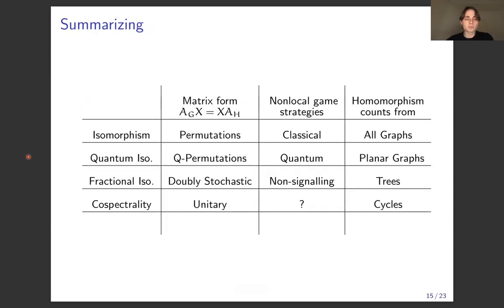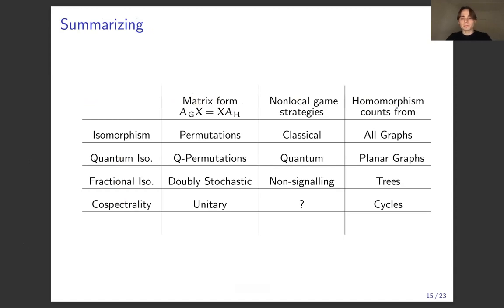Here's a quick summary of what we've seen. On the left are four relations: isomorphism, quantum isomorphism, fractional isomorphism, and co-spectrality. Along the top are three ways of viewing them: matrix formulation, strategies for a non-local game, and counting homomorphisms from some class of graphs. These give a clean table connecting all four relations to all three perspectives.